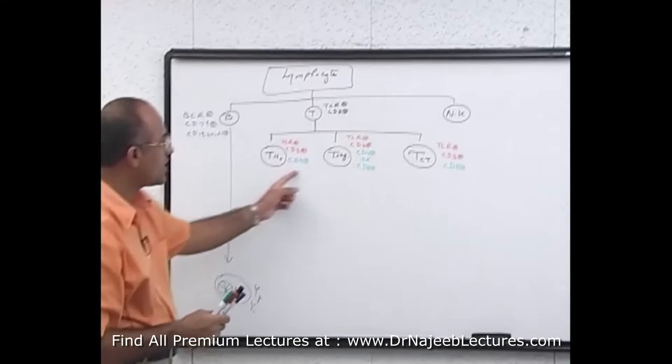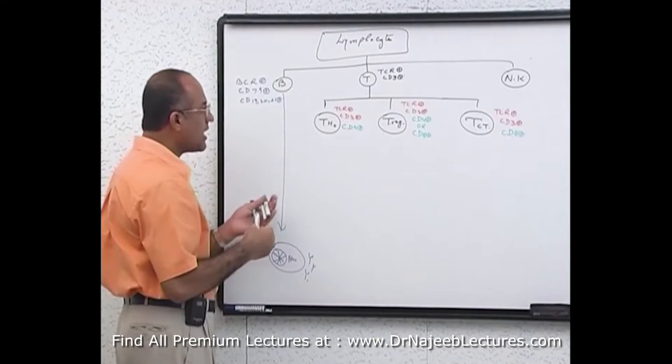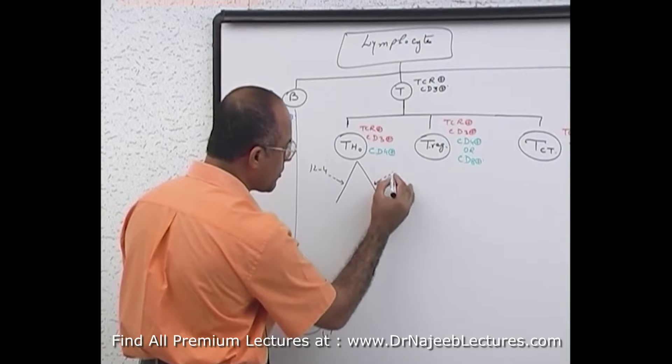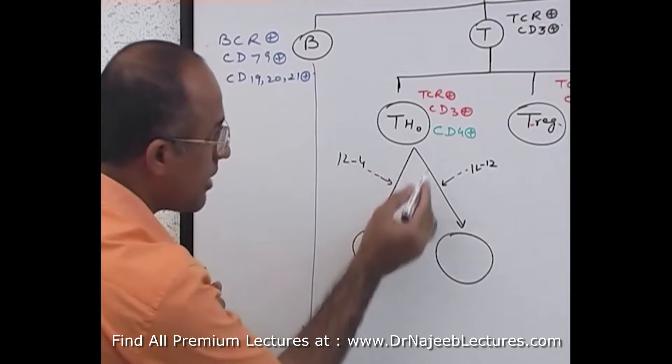This explains why T cells become TCR positive in the thymus, and why some are CD4 positive and others CD8 positive. Under the influence of different cytokines, T helper cells differentiate: under interleukin-4 they convert into T helper 2, and under interleukin-12 they convert into T helper 1.